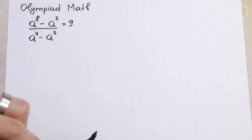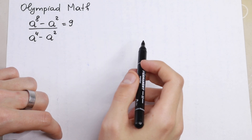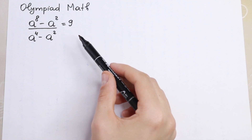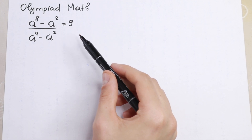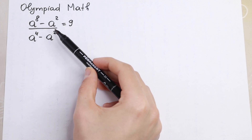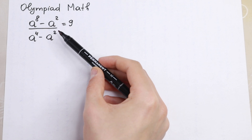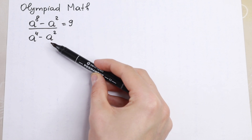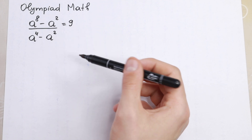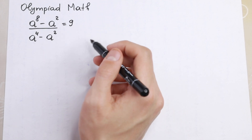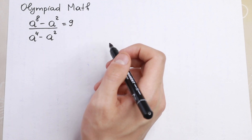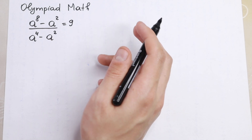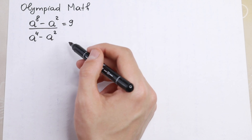Hello everyone, welcome back to High Mathematics. In this video we are going to solve this interesting Olympiad algebra problem. We have a fraction with a numerator of a to the eighth power minus a squared, and a denominator of a to the fourth power minus a squared, equal to 9. How can you solve this? There are a lot of approaches to solve this equation.